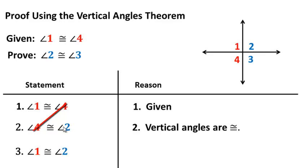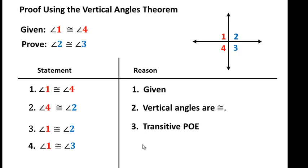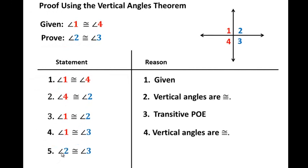We've crossed those out and combined angle one and angle two — again, that is the transitive property. Now going back to our diagram, we have established that angle one is congruent to angle two, but we're trying to prove that angle two is congruent to angle three. Let's use the fact that vertical angles are congruent: angle one is congruent to angle three because vertical angles are congruent. They are both congruent to angle one, therefore they are congruent to each other — and again that would be the transitive property. We could also justify this using the substitution property; in my opinion, either one will work.